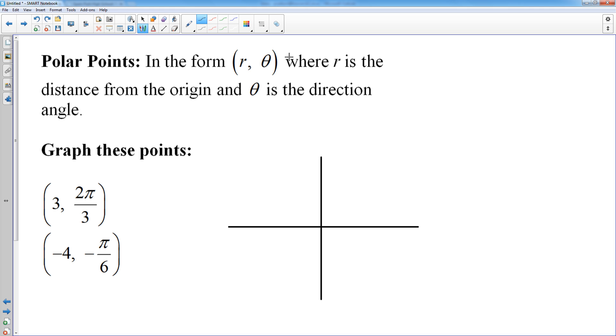You have r, theta. R tells you how far to go from the origin, and theta is your direction angle. So when you're graphing these, you start by finding the angle, which this first example is 2π over 3. The angle 2π over 3, we start at 0. 2π over 3 is right here in the 60 degree direction. So I will label this angle as 2π over 3.